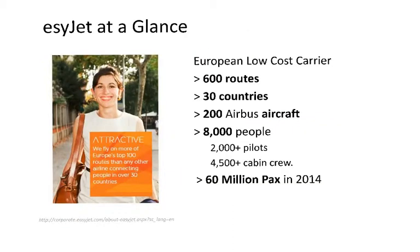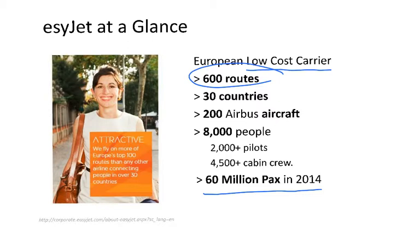But who is EasyJet? It's a low-cost carrier based in the UK. It has more than 600 routes in more than 30 countries, and more than 20 Airbus narrow-body aircraft — the A319, A320, and A321. It has over 8,000 people and in 2014 it transported more than 60 million passengers. We are talking about quite a large airline, one of the biggest low-cost airlines in Europe.